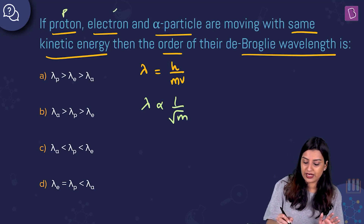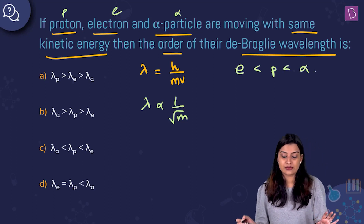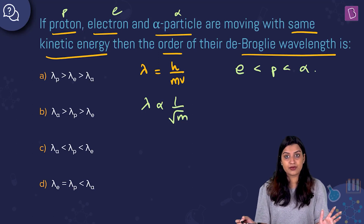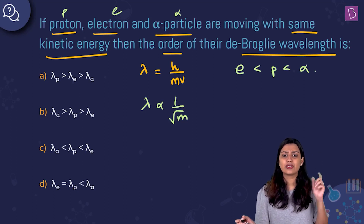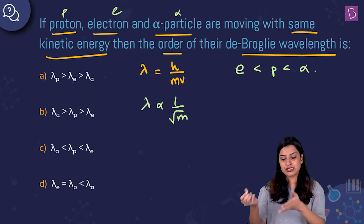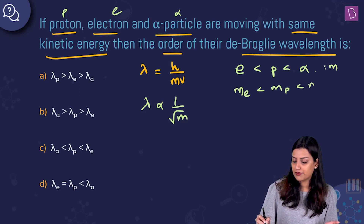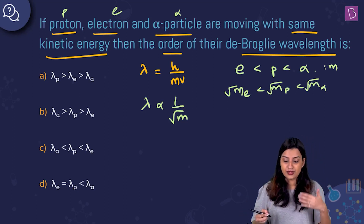The electron has the smallest mass, followed by the proton. The alpha particle is a helium nucleus (He²⁺), which contains two protons and two neutrons, making its mass approximately four times that of a proton. So the mass order is: m(electron) < m(proton) < m(alpha particle).